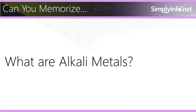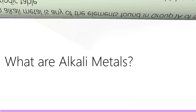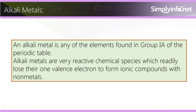An alkali metal is any of the elements found in group IA of the periodic table. Alkali metals are very reactive chemical species which readily lose their one valence electron to form ionic compounds with non-metals.